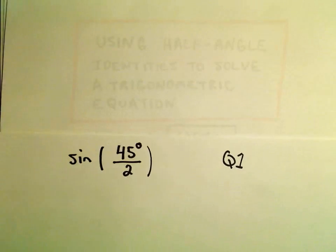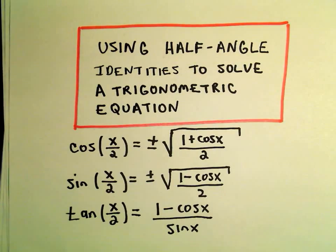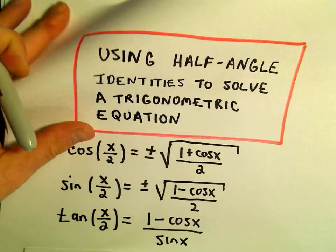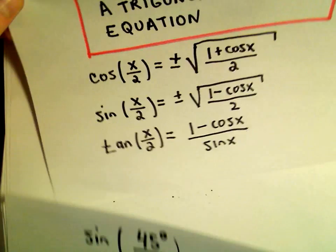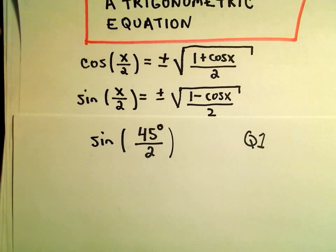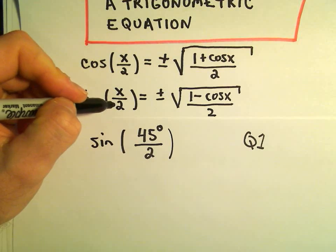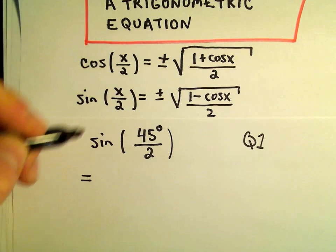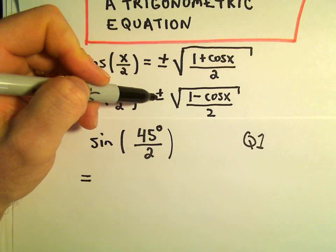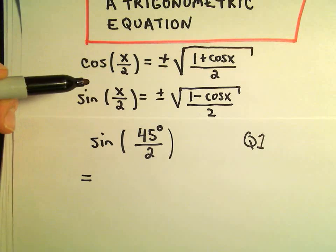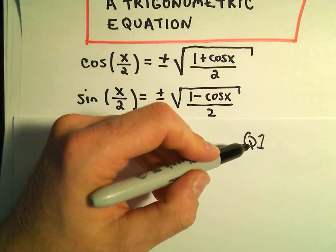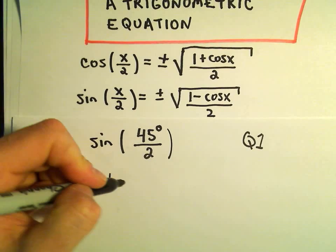Now I'm just going to go back to our identity. Once you have sine of your angle divided by 2, you have to determine whether it's positive or negative. But since 22.5 degrees is in quadrant 1, I know that we'll use the positive.